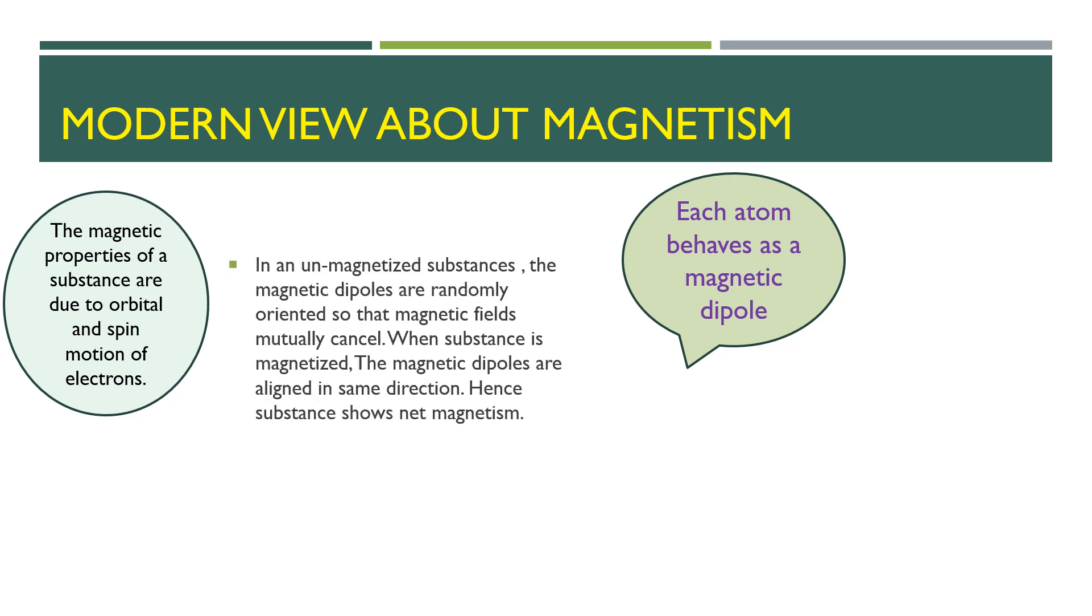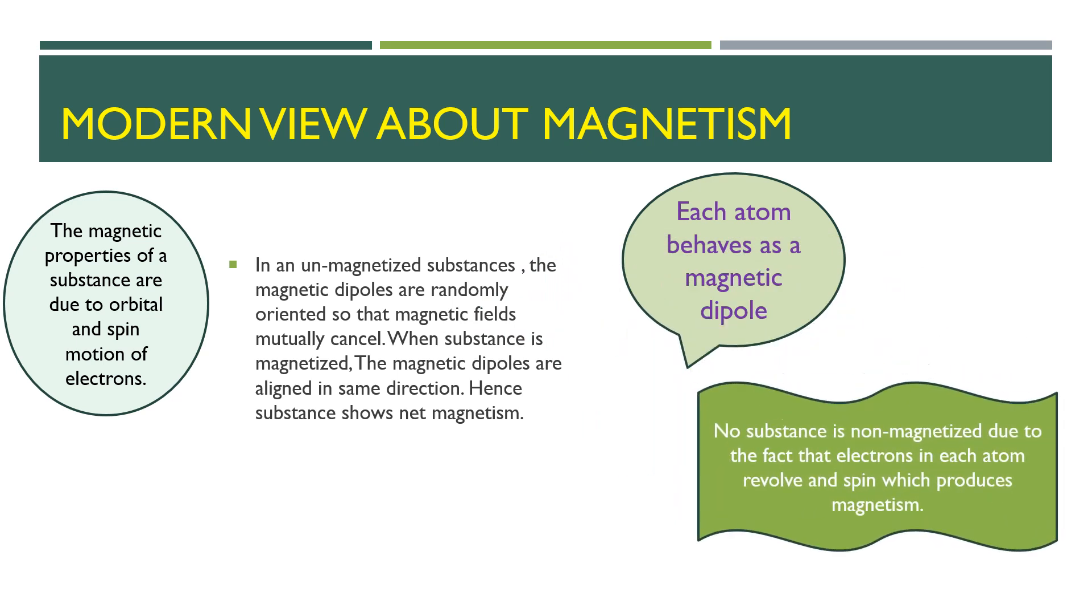In unmagnetized substances, these magnetic dipoles are randomly oriented so their magnetic fields mutually cancel the effect of each other. When the substance is magnetized, it means that the magnetic dipoles have aligned themselves in the same direction so the substance shows magnetism.